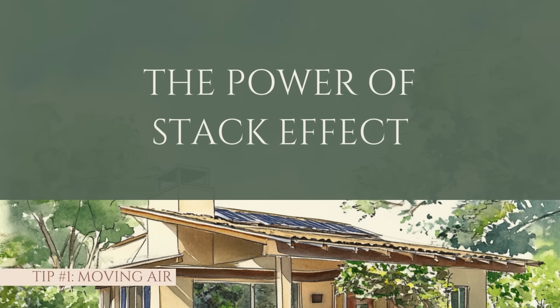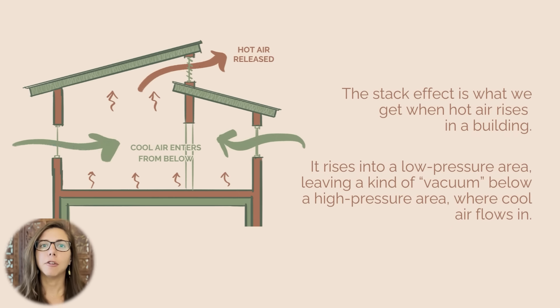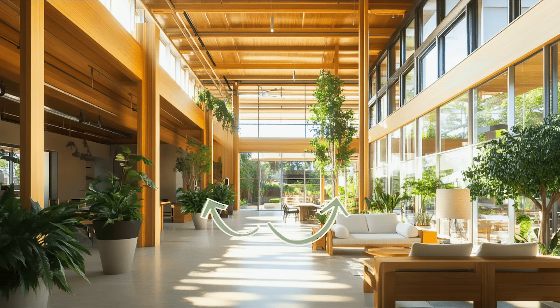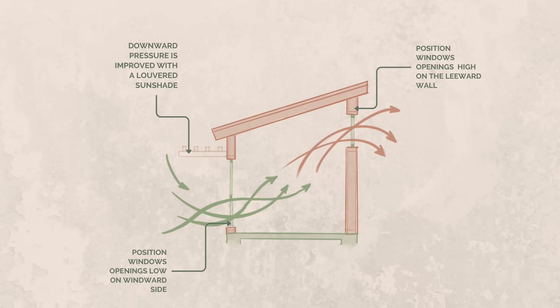Now let's talk about the stack effect, because it's a great example of pressure zones in action. The stack effect is what we get when hot air rises in a building into a low pressure zone, leaving a kind of vacuum below — a high pressure area where cool air flows in. The cool air comes in below, heats up, rises, and pulls in a fresh supply of cool air. Now we've got a natural ventilation system that keeps air moving through your home without mechanical ventilation.